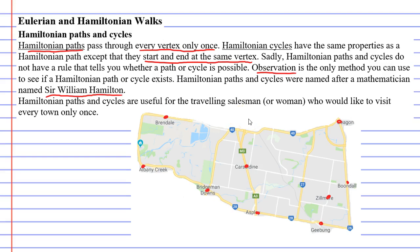Starting at Brendale and going across and down to Castledyne, then to Aspley, then to Bridgman Downs, and across to Albany Creek — this would not be an ideal path. I still need to get to Gibang, Zilmir, Boondal, and Deegan, and in order to do that I'm going to have to pass through vertices I've already passed through before — going back through towns I've already sold in.